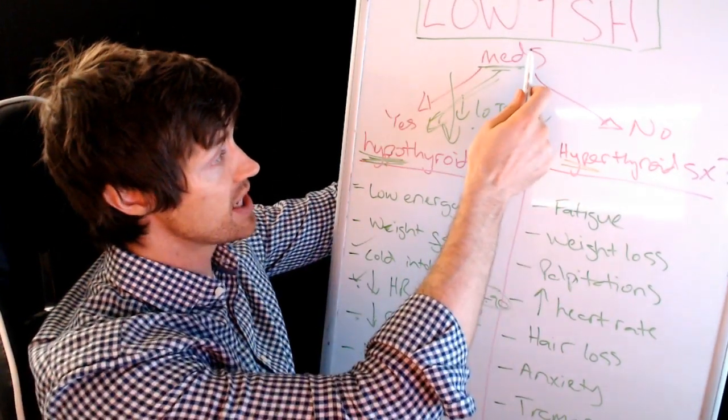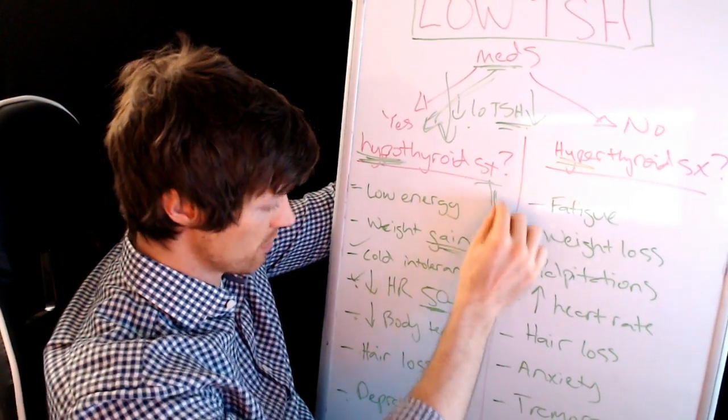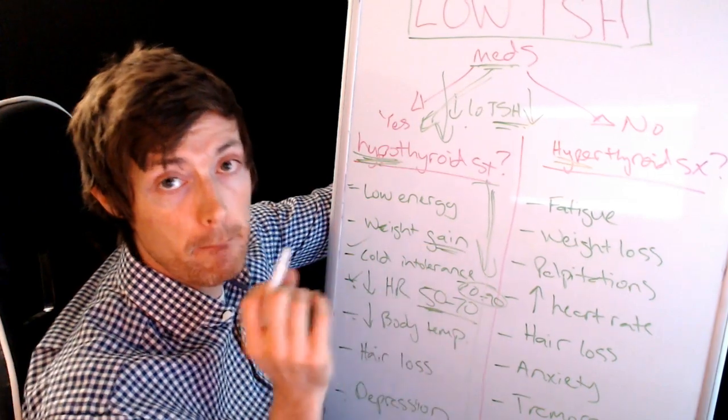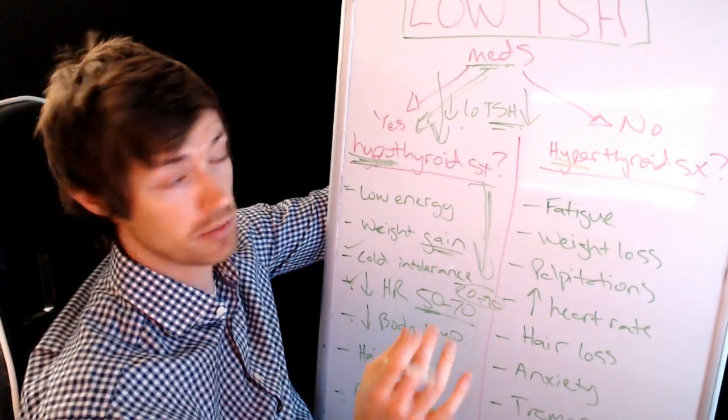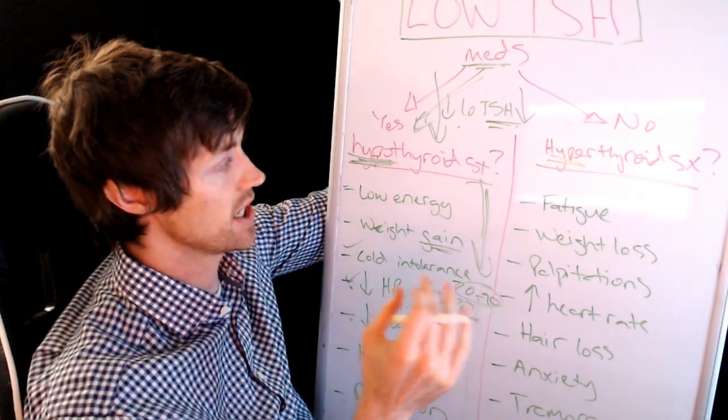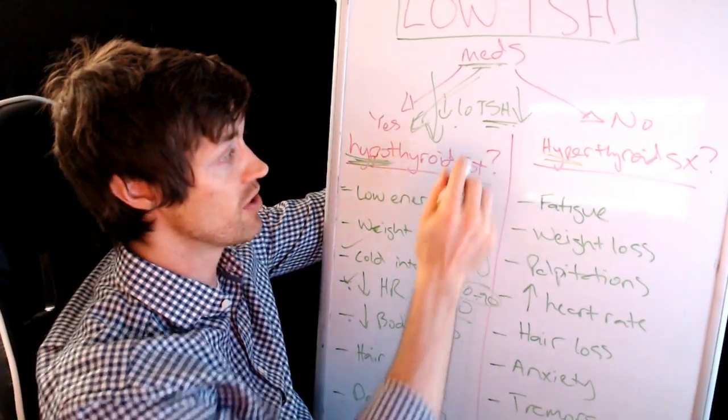So if you have a low TSH, you're taking thyroid medications, but you're experiencing all these symptoms, then that's an indication that you are hypothyroid still. I know this might be a confusing concept for many of you because you're so used to looking at the TSH, but you can absolutely be, your cells can be deficient in thyroid hormone, even though your TSH is low.